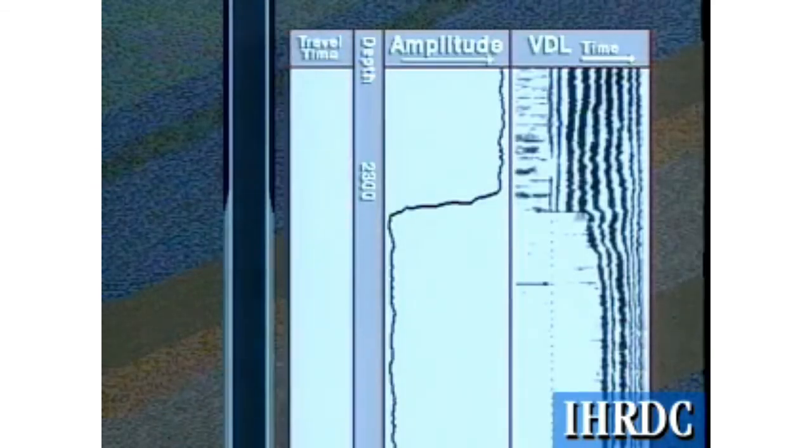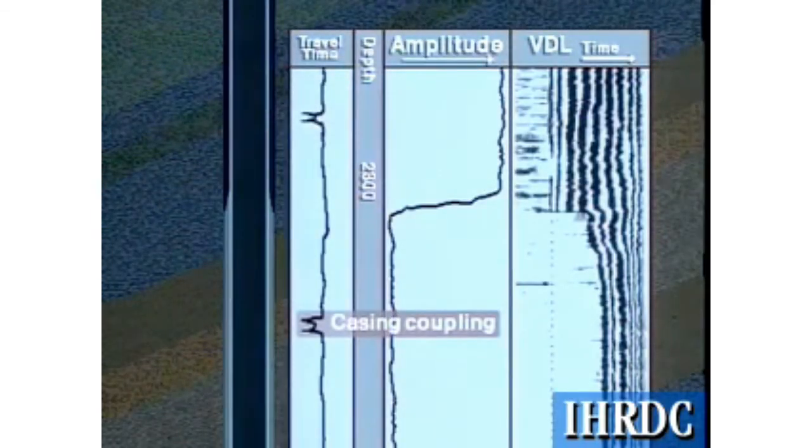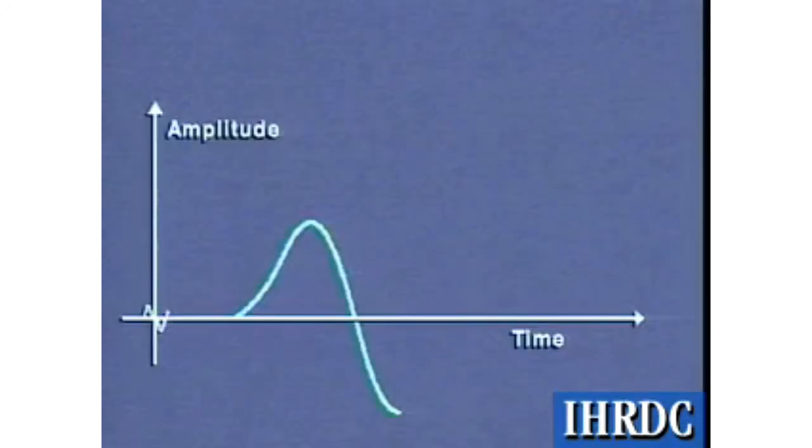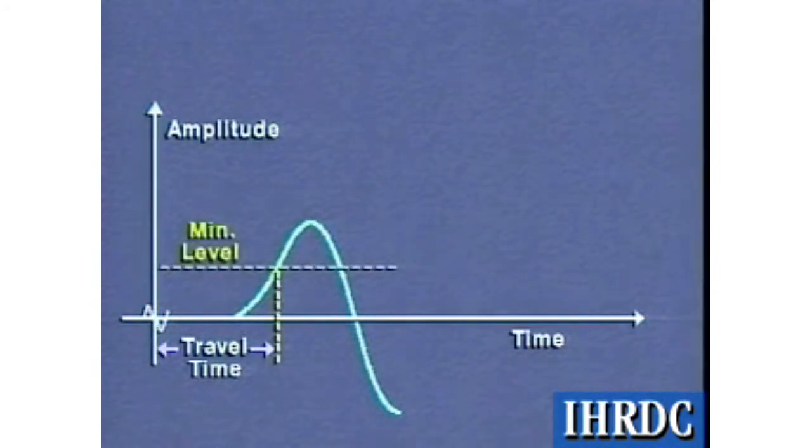The travel time curve is the primary quality control curve on a CBL. Travel time is measured from the initiation of the acoustic signal at the transmitter to the arrival of the first signal at the near receiver, which reaches a minimum amplitude level.